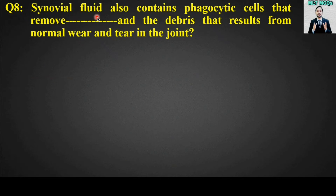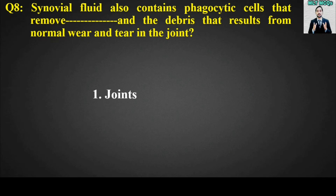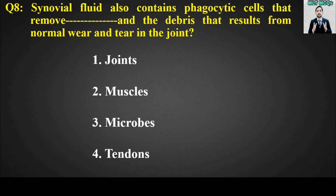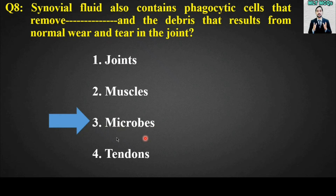MCQ number eight: Synovial fluid also contains phagocytic cells that remove blank and the debris that results from normal wear and tear in the joint. Options are: joints, muscles, microbes, or tendons. The right answer is option number three — synovial fluid contains phagocytic cells that remove microbes and the debris from normal wear and tear in the joint.